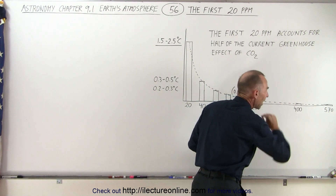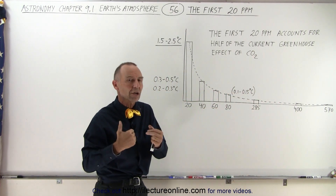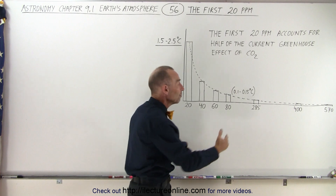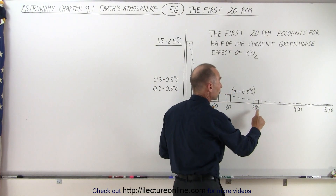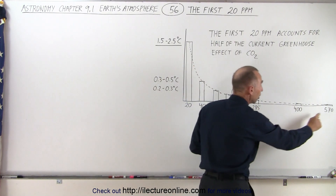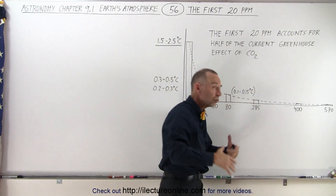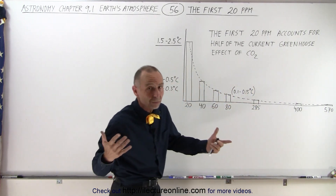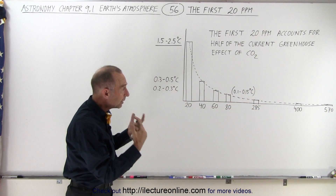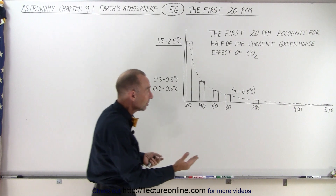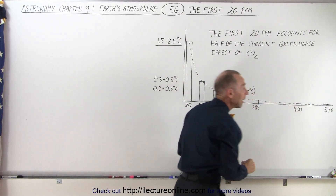So maybe even these predictions we have here are greater than they actually are — the contributions might even be smaller. Therefore, going from 285 parts per million to double that, 570, which may be something we might reach by the end of this century, the increase in temperature may actually be rather small.